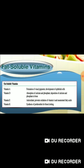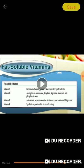Vitamin A functions include formation of visual pigment and development of epithelial cells. Vitamin D aids in the absorption of calcium and phosphorus and the deposition of calcium and phosphate in bone. Vitamin E acts as an antioxidant, preventing oxidation of vitamin A and unsaturated fatty acids. Vitamin K is involved in the synthesis of prothrombin and blood clotting.